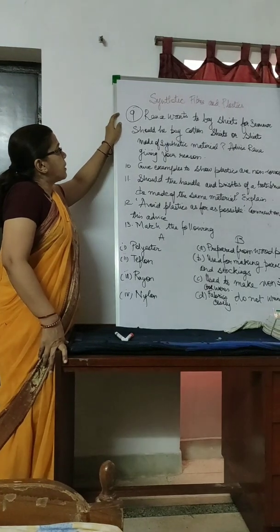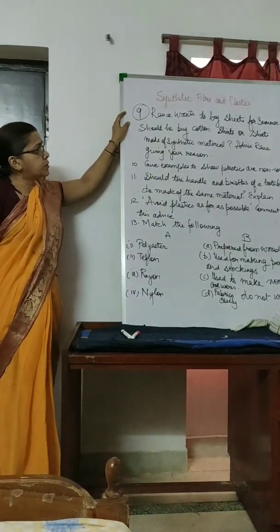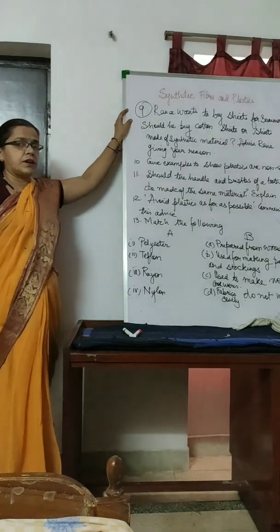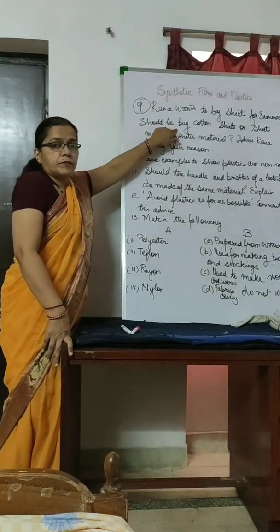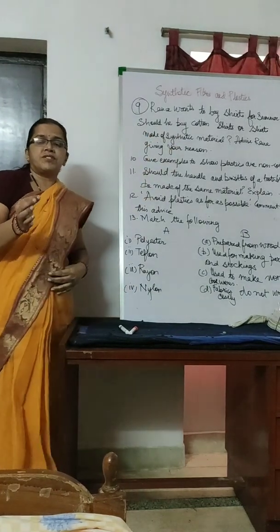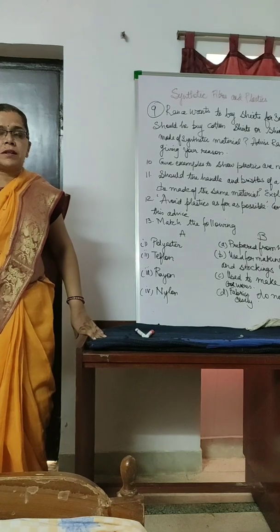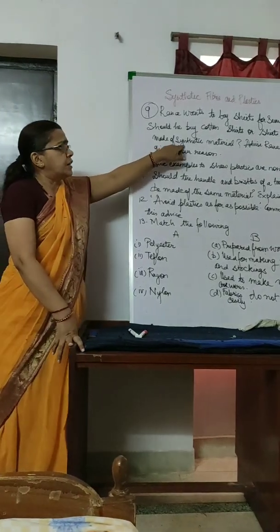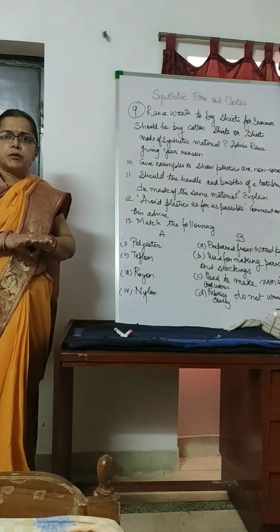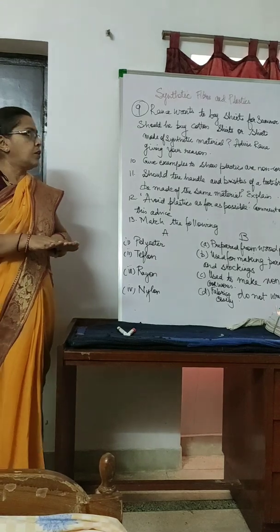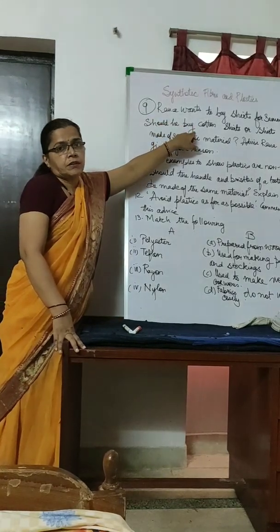Question nine: Rana wants to buy shirts for summer — should he buy cotton or synthetic fiber shirts? Cotton is a natural fiber and has pores that allow sweat to be absorbed from the body, which then evaporates giving a cooling effect. Synthetic fibers are woven very close together with fewer pores, so they do not absorb sweat easily. It would be advisable for Rana to wear cotton shirts.